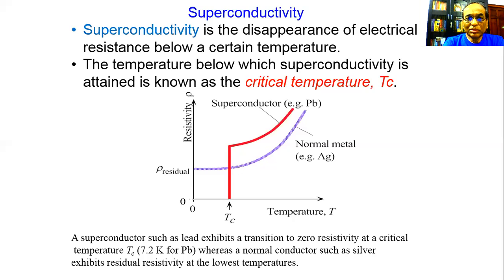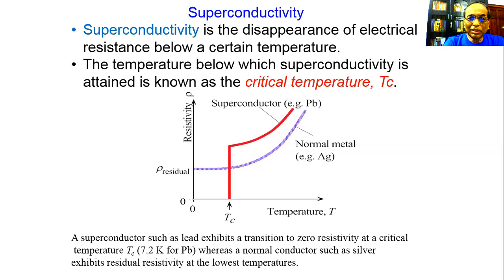The figure shown here is a characteristics plot of resistivity across the temperature T — it is a resistivity versus temperature plot. In this characteristics curve, the blue curve is for the normal metal. As we lower the temperature, the resistivity decreases, but after a certain point when approaching absolute zero temperature, the resistivity is not decreasing — it is saturated, maintaining a certain residual value.